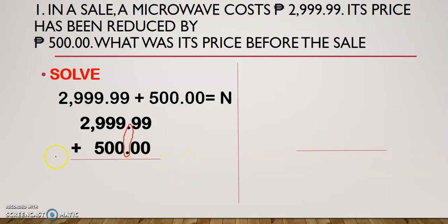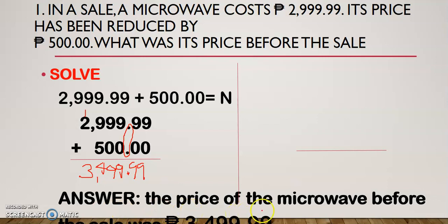Once you are done with the arrangement, you have to solve now. Since this is addition, let us add. 9 plus 9, 9 plus 0 is 9. Bring down the decimal point. 9 and then 9 plus 0 is 9 again. And then 9 plus 5 is 14 — carry 1. And then this is 3. So your final answer now would be that the price of the microwave before the sale was 3,499.99.